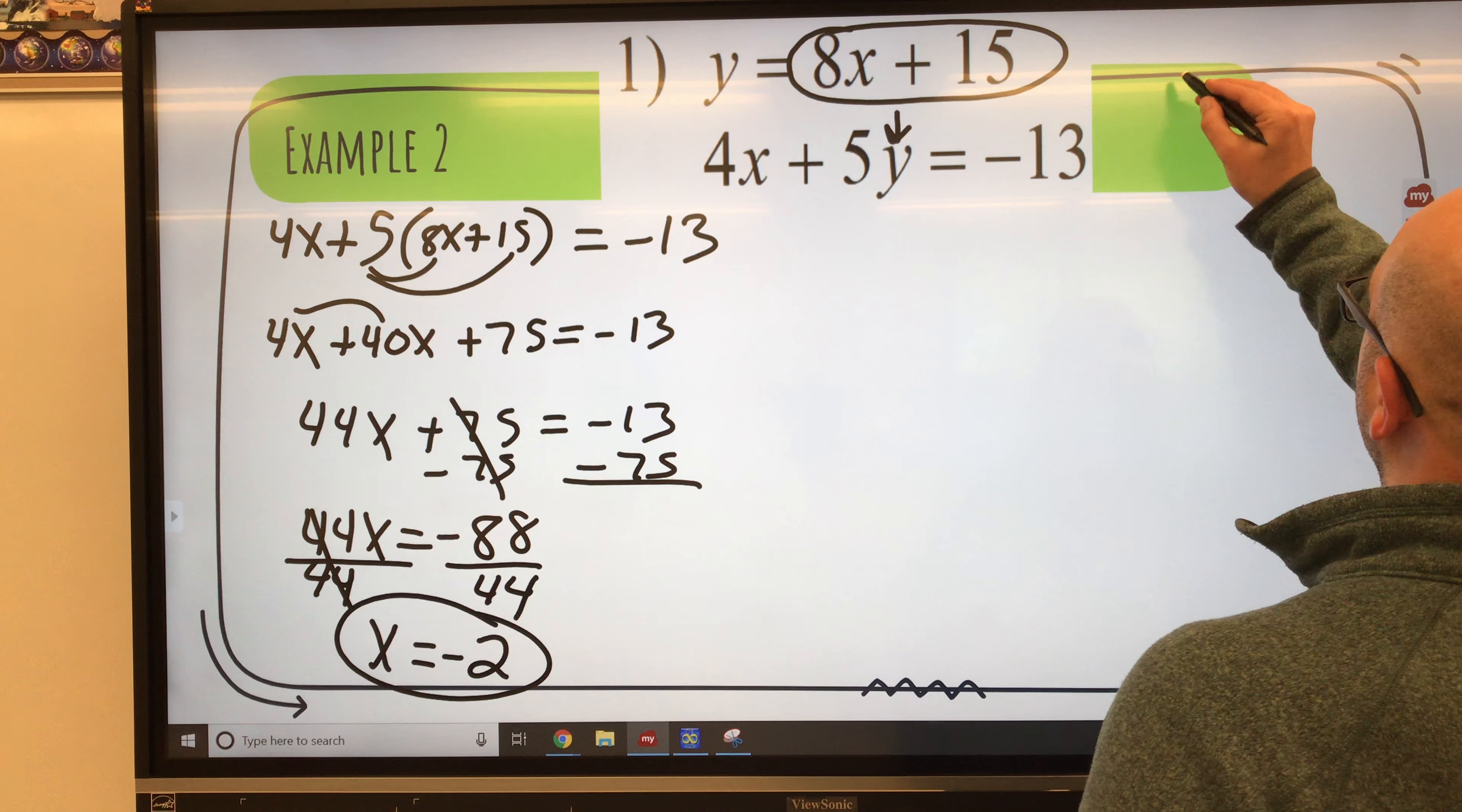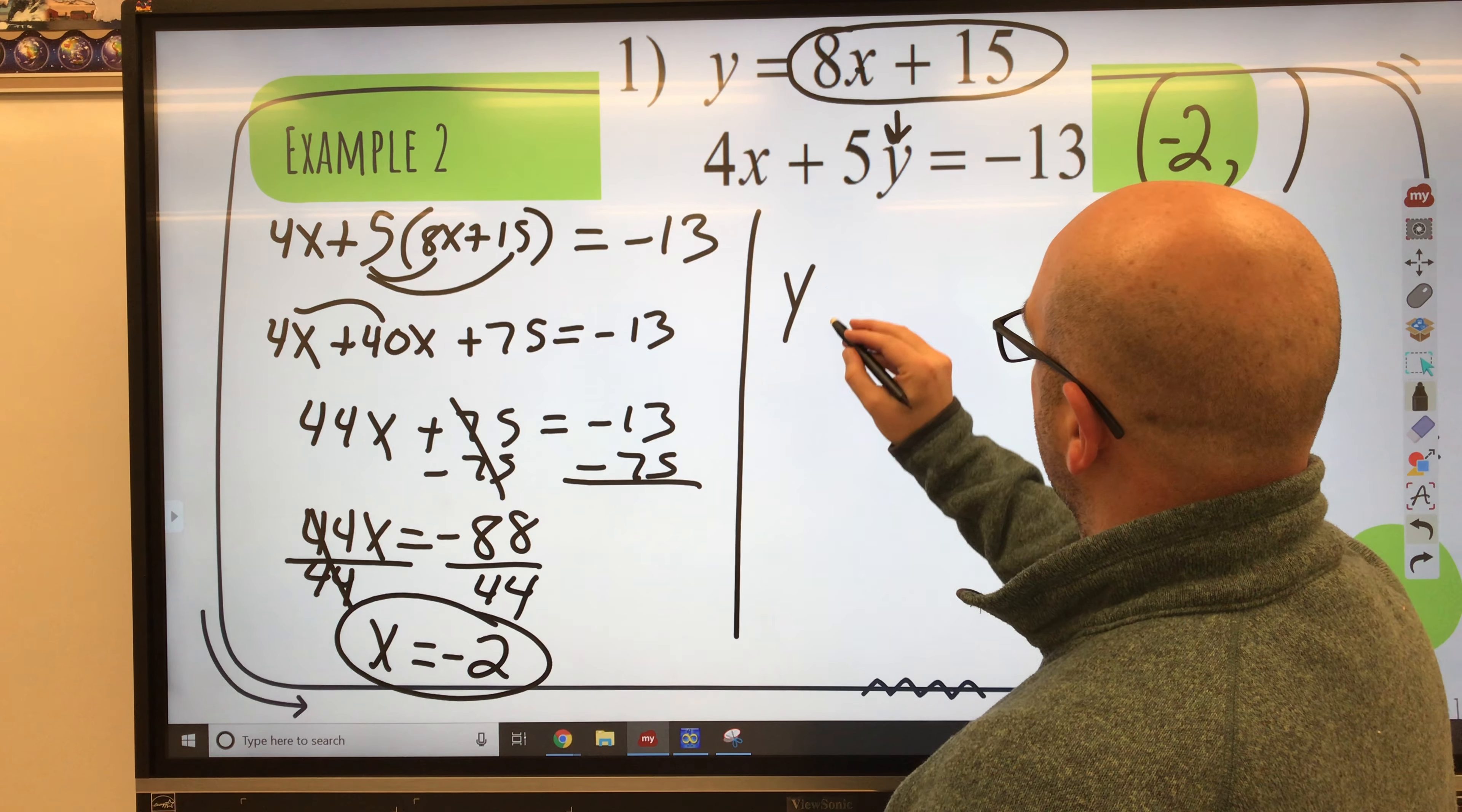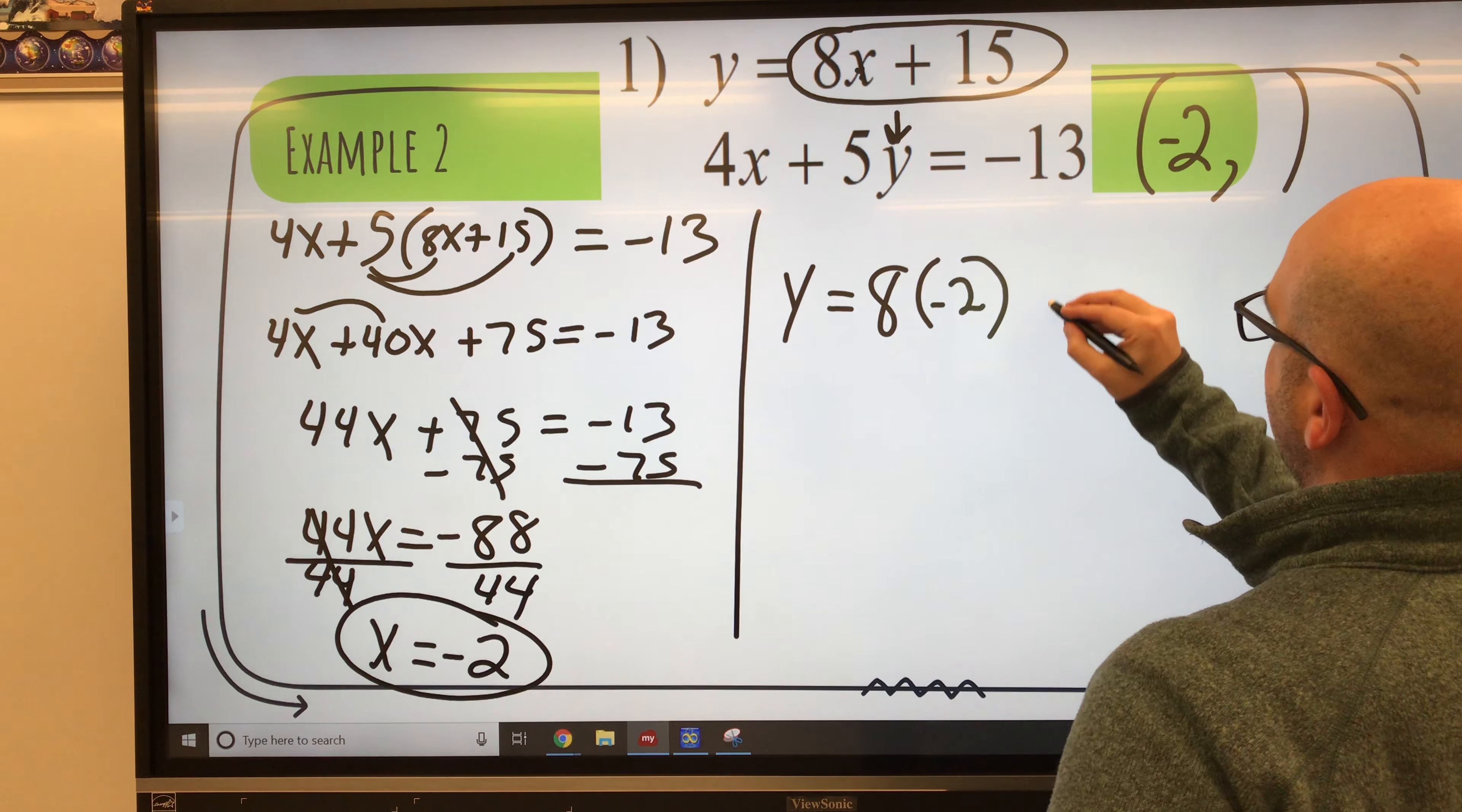So up here in my solution, I already know my x value is negative 2. So now I'm going to take that negative 2 for x and put it in right here for that x. So y equals 8. And instead of x, I'm going to use the value of x times negative 2 plus 15.